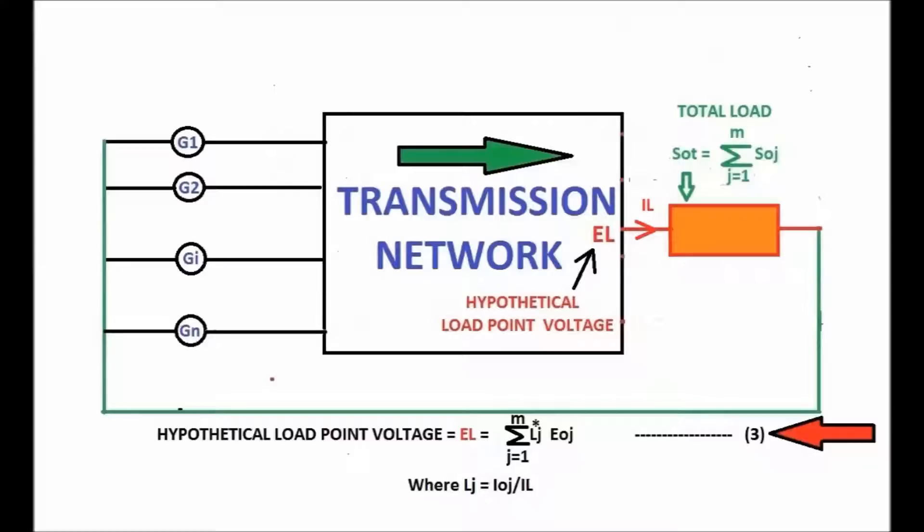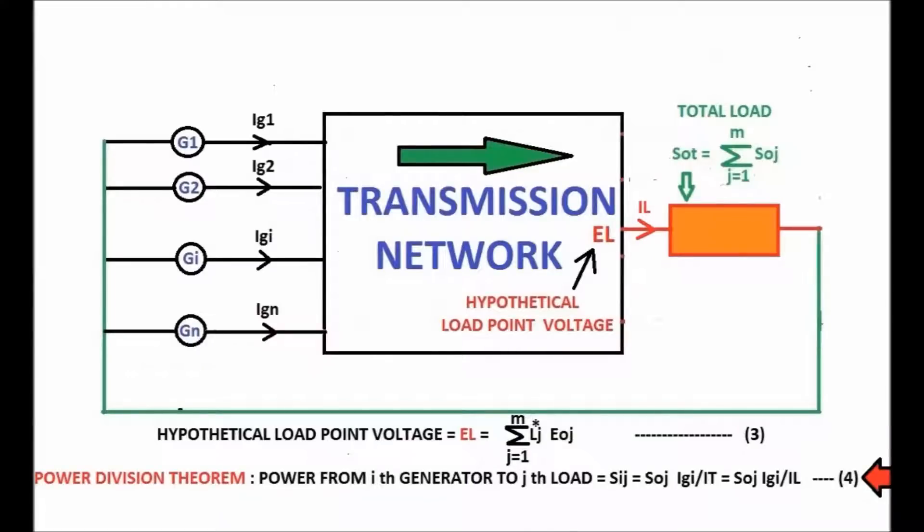Equation 3 can be developed within a few steps by using the power division theorem. As per the theorem, the share of power from the i-th generator to the j-th load Sij equals the product of the j-th load power Soj and the ratio of the i-th generator current Igi to the total load current IT, as in Equation 4.